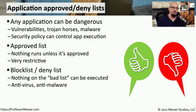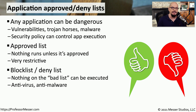Another way to implement this control is to have a block list or a deny list. This would be a list of applications that would specifically be prevented from running on this particular endpoint. This would mean that users were allowed to install applications unless that application is specifically listed in the deny list. It's very common for antivirus or anti-malware software to have their own deny list, and if a user tries to launch that application, the anti-malware software will prevent it from running.